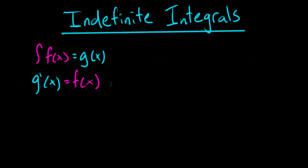We take the antiderivative of f of x, we get g of x. And if we take the derivative of g of x, we get f of x. Now, what does this mean in practice? Because f's, g's, and x's aren't going to help us — we need some numbers. We need to practice this to make sense of it. So let's say I want to take the integral of 3.